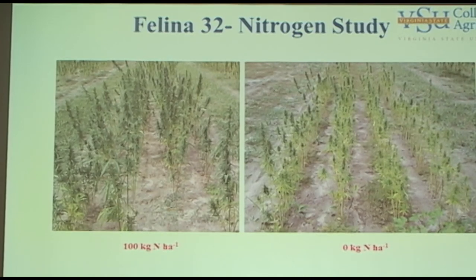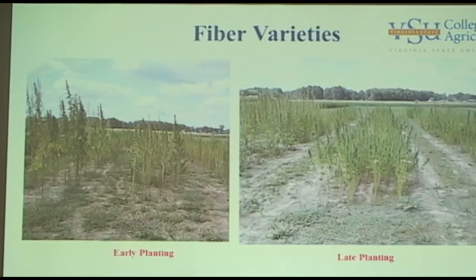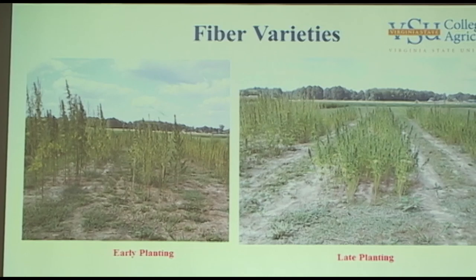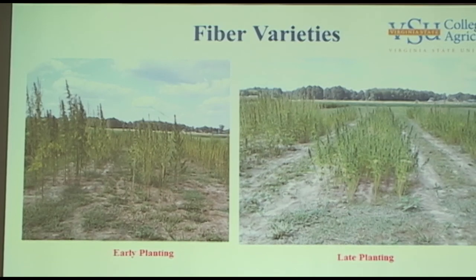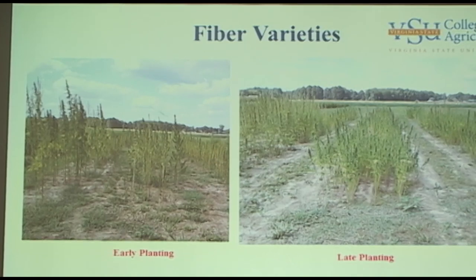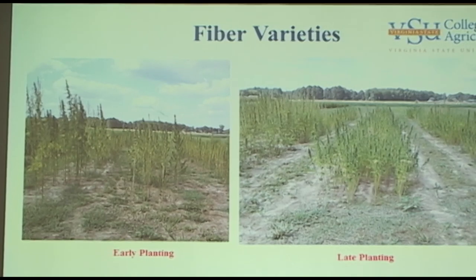For Felina 32, we have 100 pounds per acre and zero nitrogen as treatments, and there are different nitrogen rates. These show the response to nitrogen. These are the five varieties that we have in the field, and some of those that survived the April 15th planting are really tall — about six to seven feet tall.